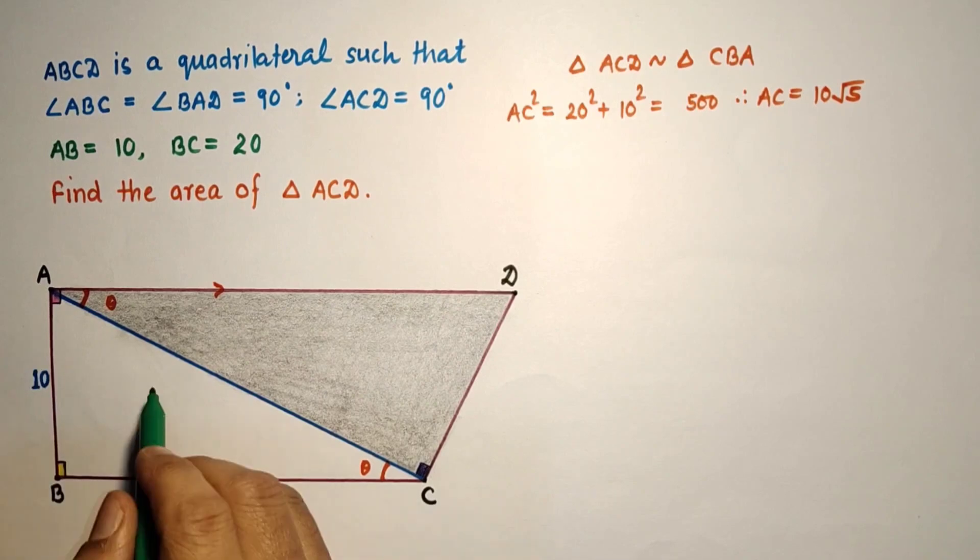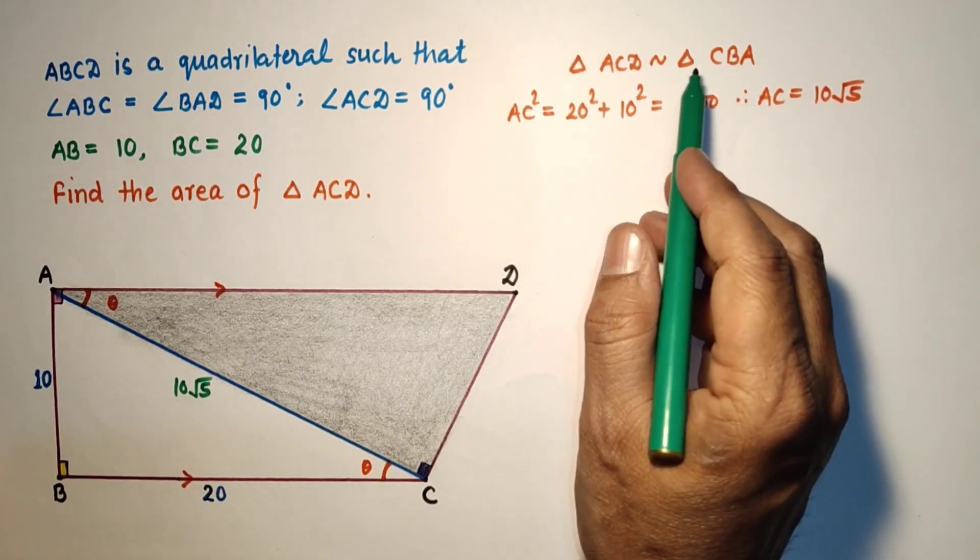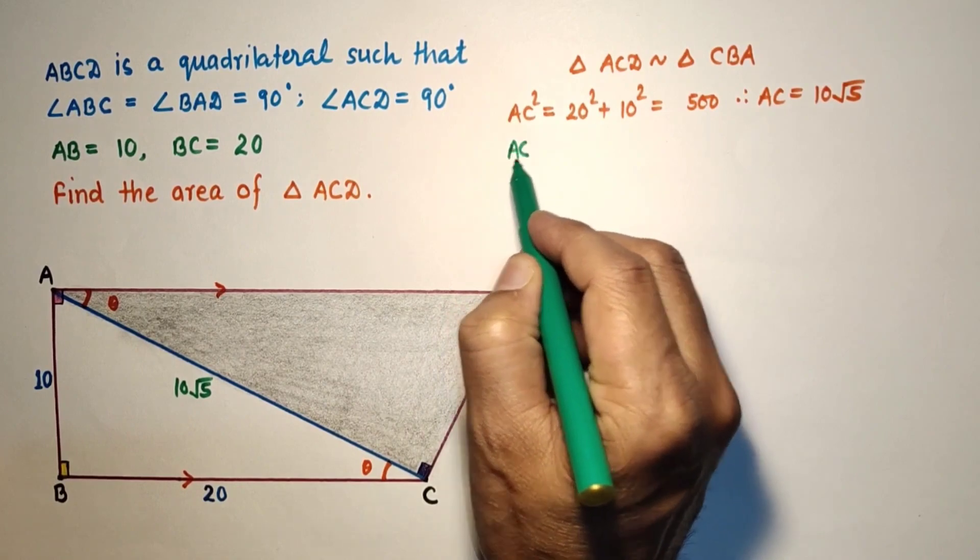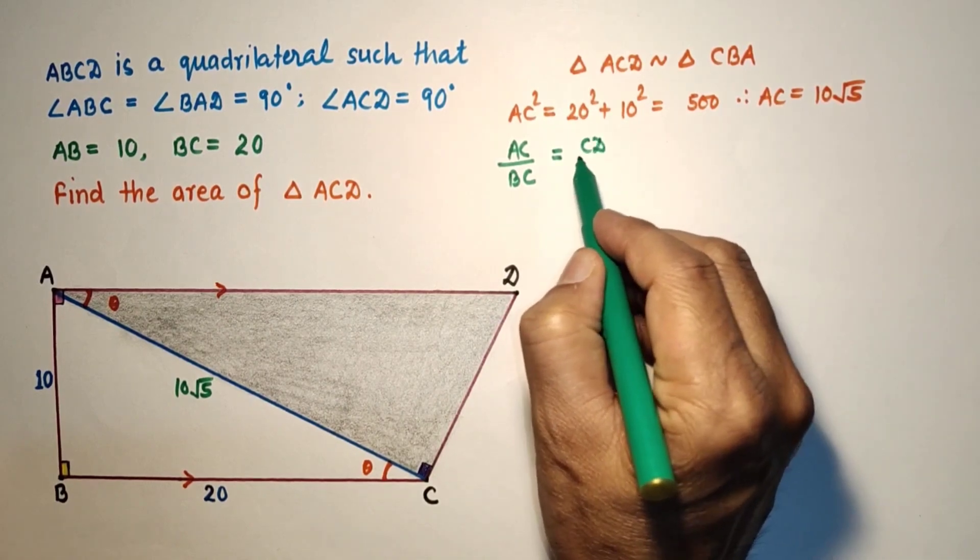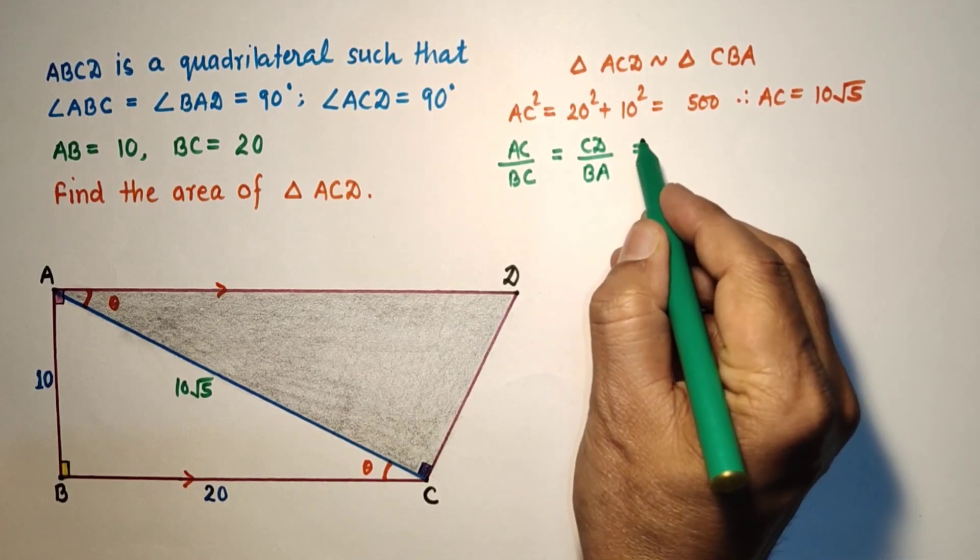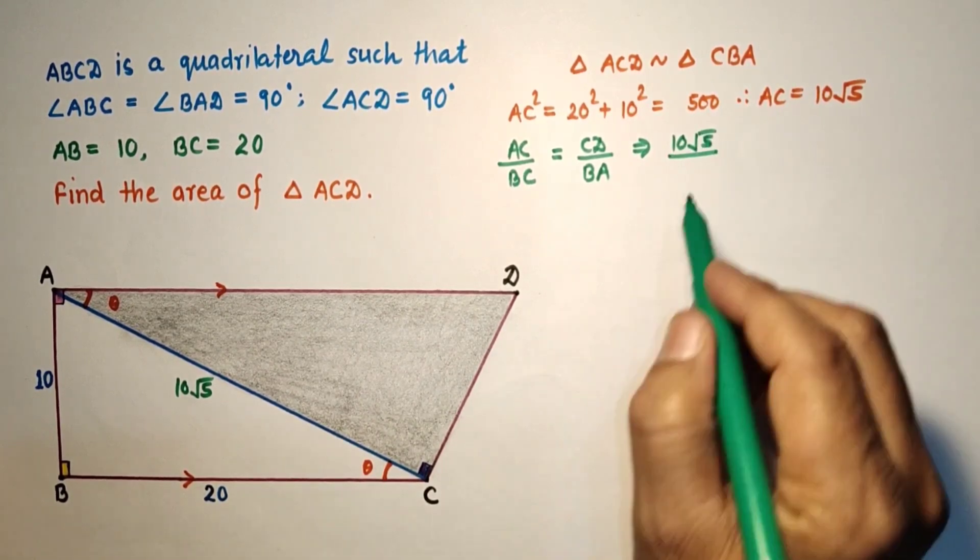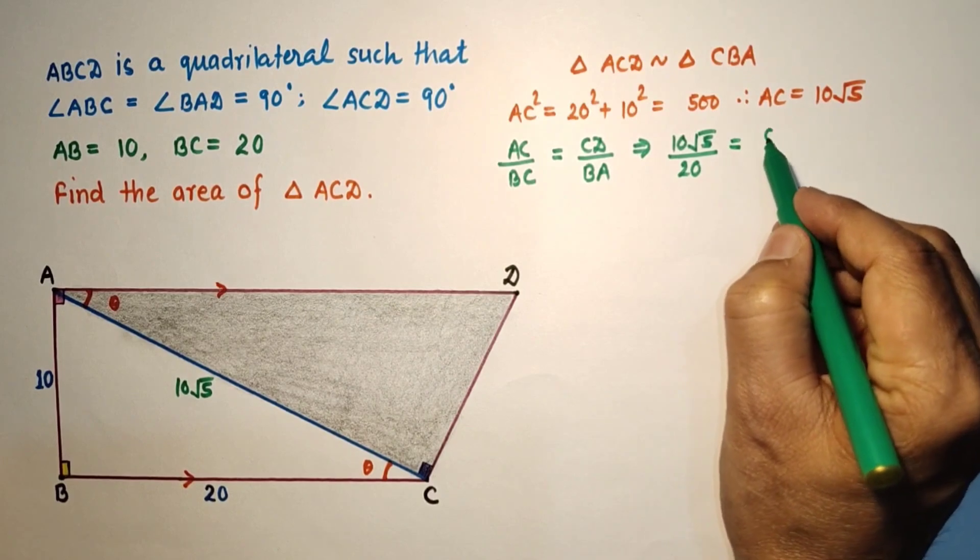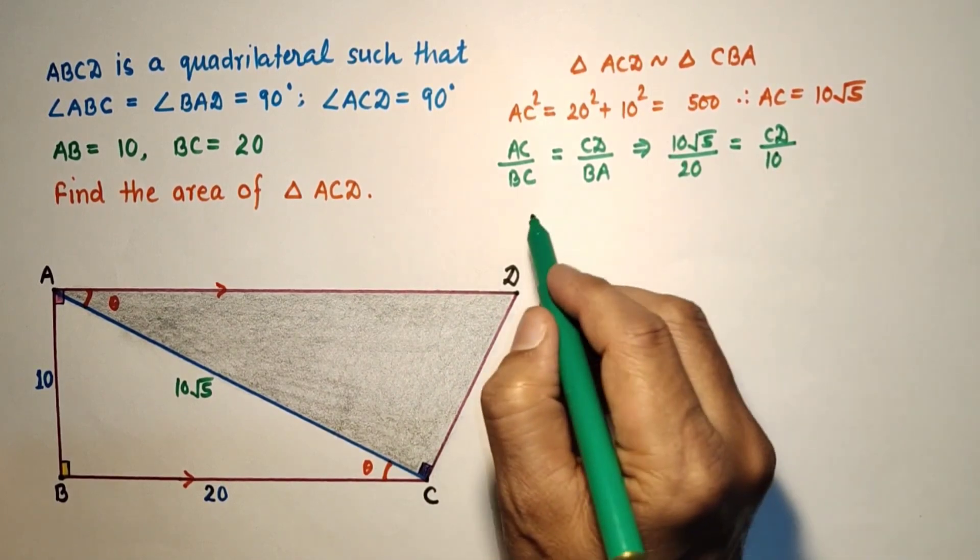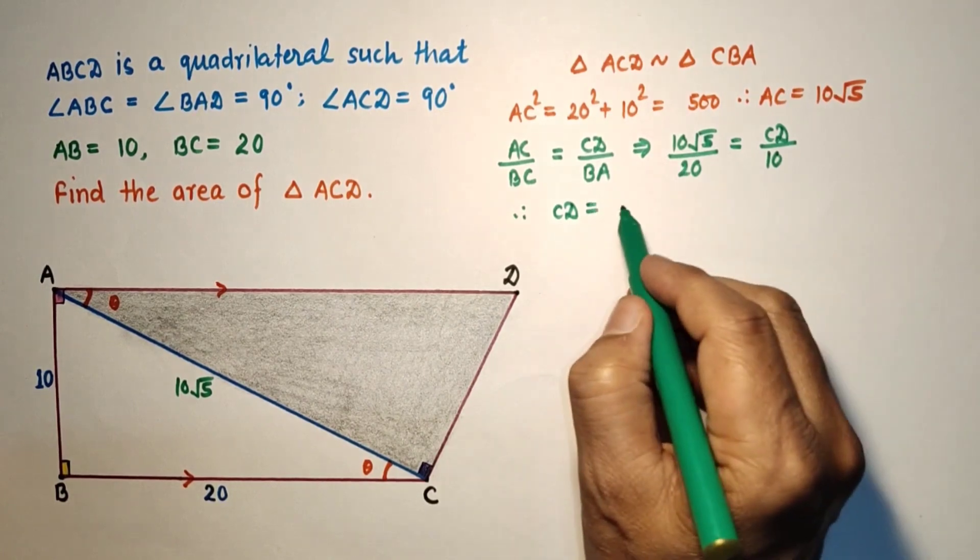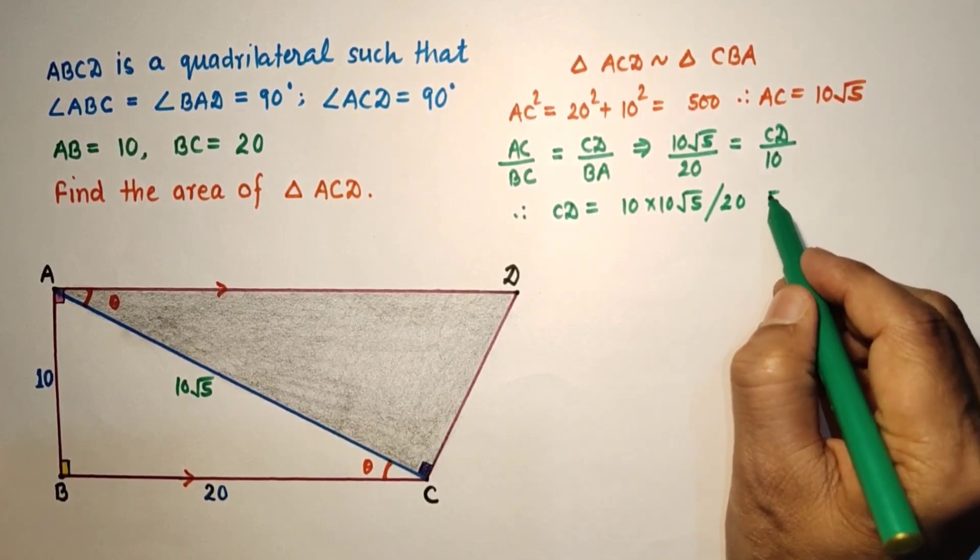So this AC we found is 10 root 5. We can say that for similar triangles, corresponding sides are in the same proportion. So AC upon BC equals CD upon BA. That is, AC we found is 10 root 5 over BC, which is 20, equals CD upon BA, which is 10. So we can say that CD equals 10 times 10 root 5 divided by 20, which equals 5 root 5.